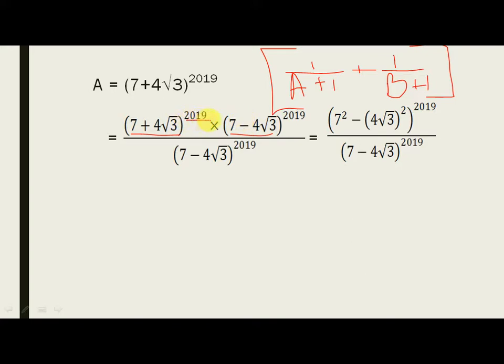You will get 7 square minus 4 into root 3 square. A plus B into A minus B is equal to A square minus B square. Simple algebraic identity. Now, 7 square is what? 49.